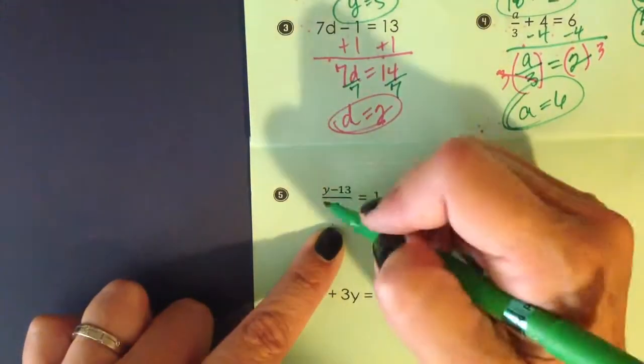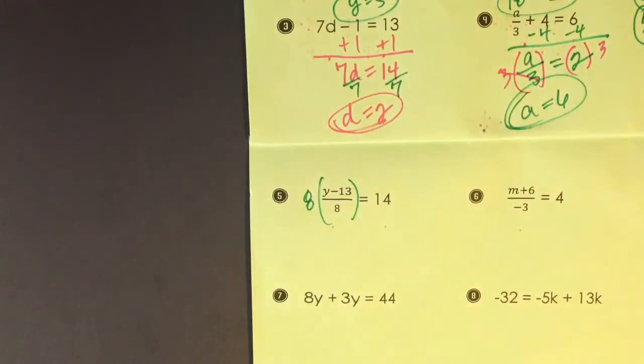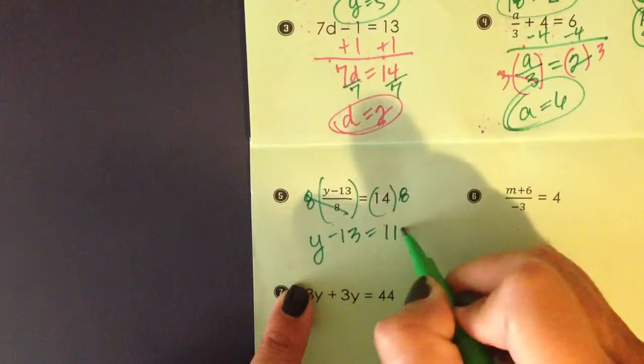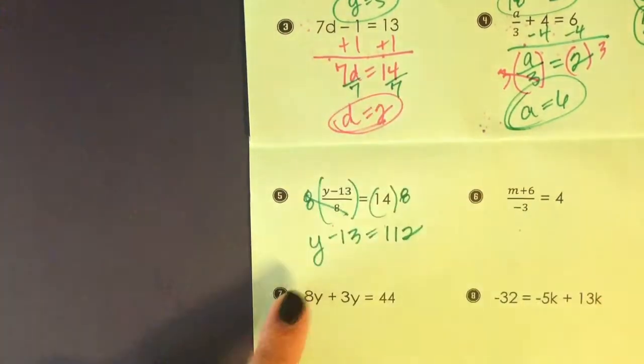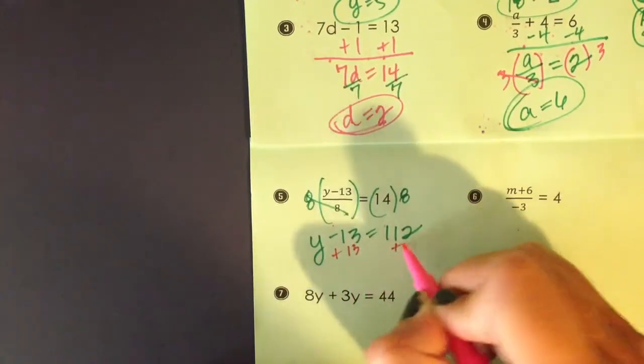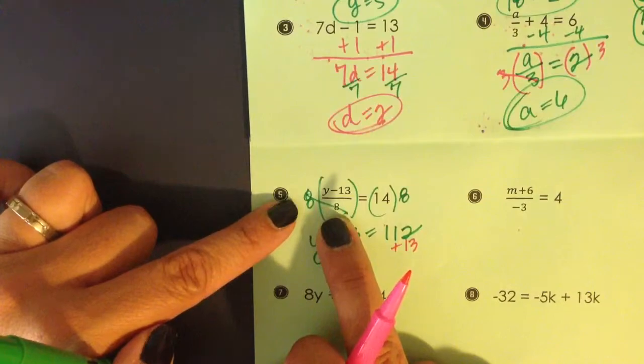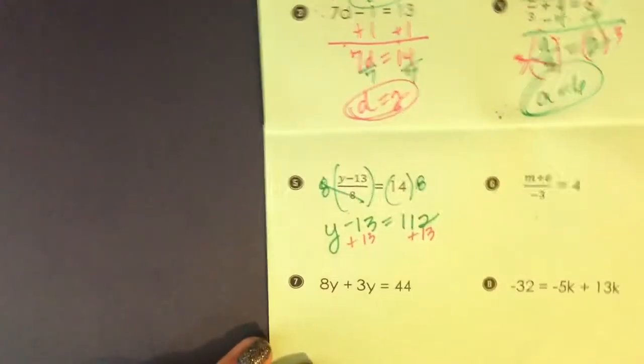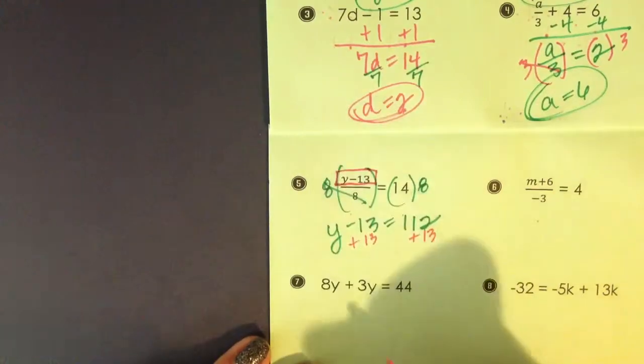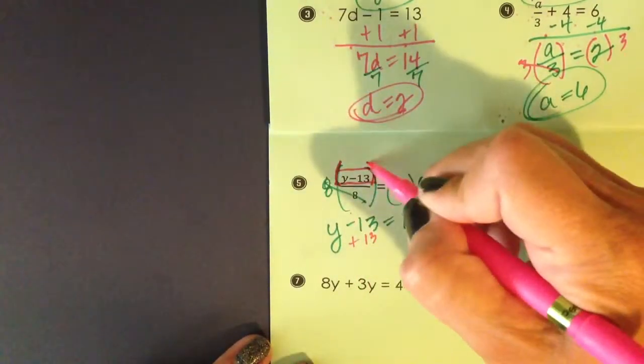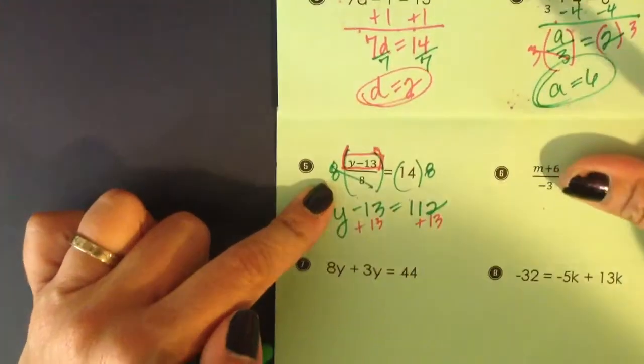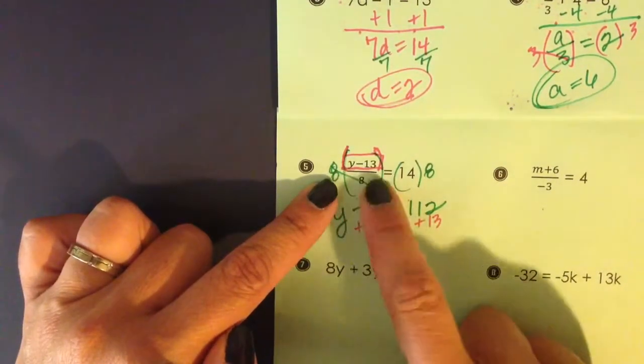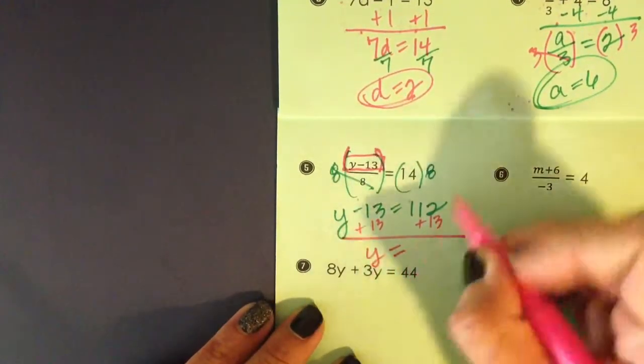In order to undo divide by 8 in number 5, I'm going to multiply both sides by 8. 114 times 8 is going to give me 112 on the right-hand side. You may have wondered why I undid the division, because I said we're going to always undo our addition and subtraction first. But when we see a quantity in the top of a fraction like that, we have to treat it as if it's grouped up. The fraction bar is a grouping symbol. So I had to undo what was affecting that group of values. Let me finish this one off. y is 125.